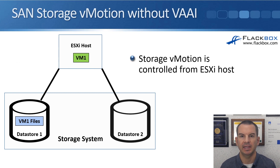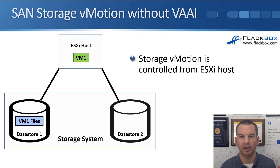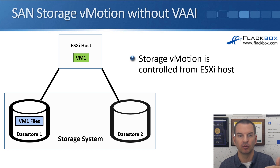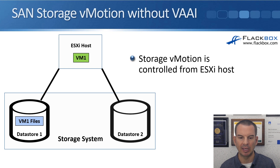Let's see how VAAI improves performance by first looking at what happens when we don't have it enabled. I'm going to use Storage vMotion for this example. With vMotion, you can move a virtual machine from one ESXi host to another ESXi host. With Storage vMotion, you're moving the virtual machine's files from one datastore to a different datastore.